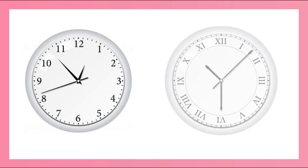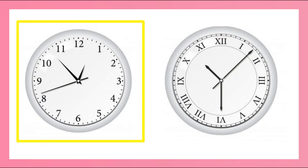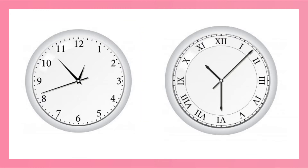I'm sure you've seen a clock that looks like this, but have you ever seen a clock that looks like this? The numbers on this clock are the symbols we're used to seeing — these are called Arabic numerals. The numbers on this other clock are written as symbols that might not look very familiar to you. They are called Roman numerals.